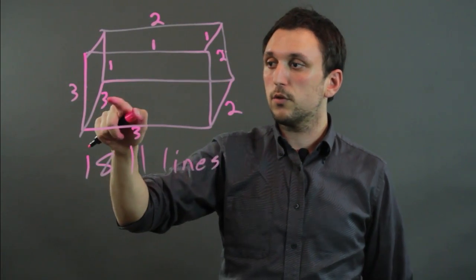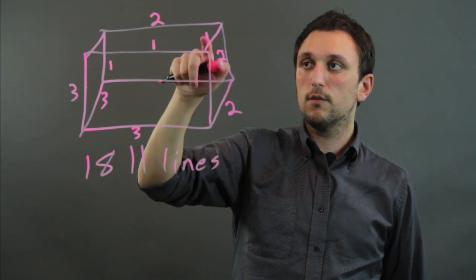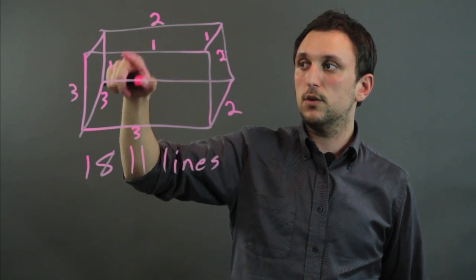And we add them up. 3 plus 3 is 6, plus 3 is 9, plus 2 is 11, plus 2 is 13, 14, 15, 17, 18.